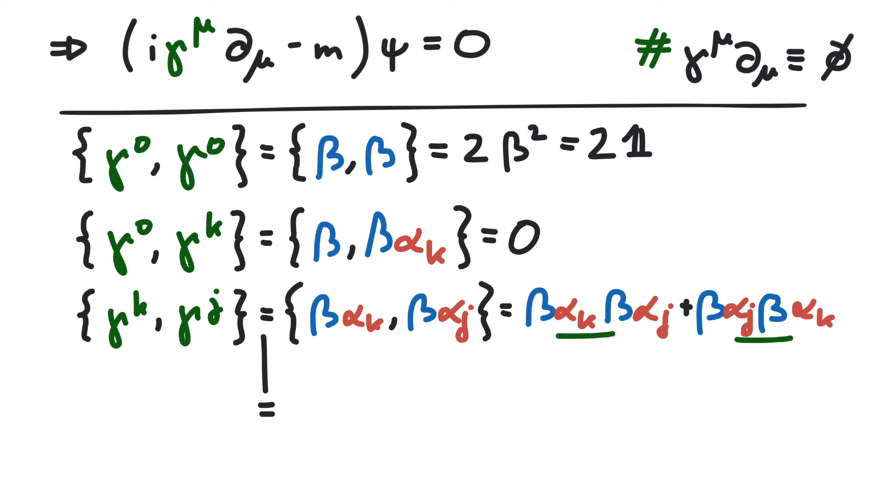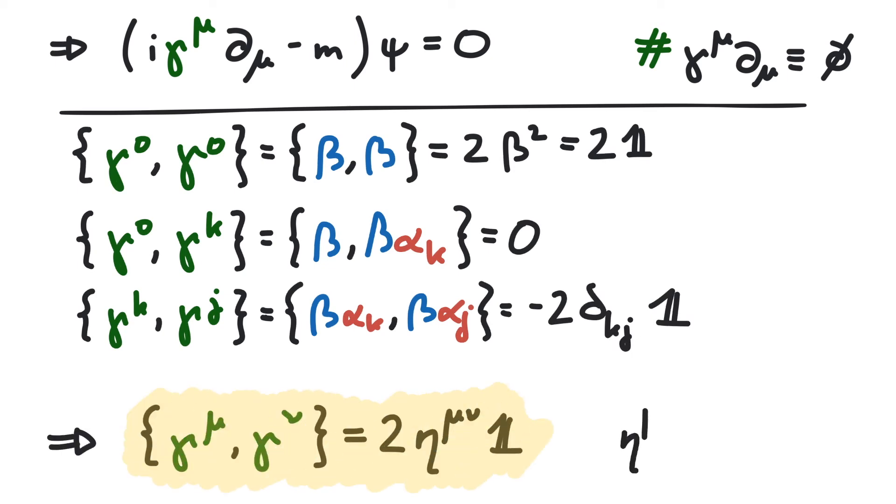Then we can use the anticommutator of two alphas to get to our result. Finally, we can collect our three anticommutators into one equation like this using the Minkowski metric eta.